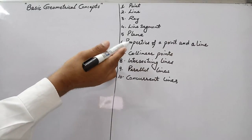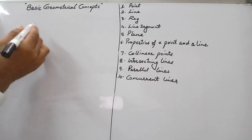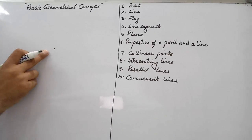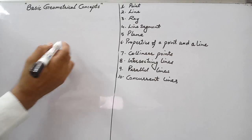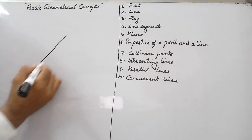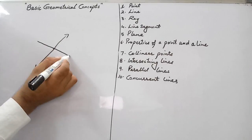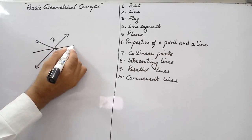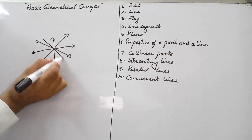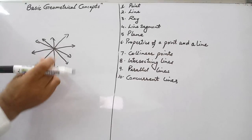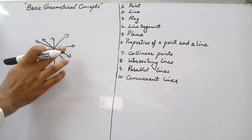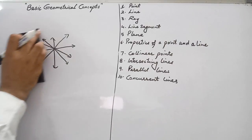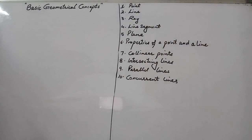Next are properties of a point and a line. If I draw a point here, how many lines can be passed through this point? We can draw one line, a second line, a third line — many lines passing through this single point. So unlimited number of lines can be drawn passing through a single point.